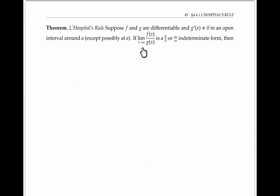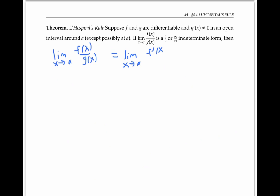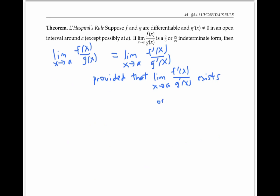L'Hopital's rule can be applied when f and g are differentiable functions, and the derivative of g is nonzero in some open interval around a, except possibly at a. Under these conditions, if the limit as x goes to a of f of x over g of x is a zero over zero or infinity over infinity indeterminate form, then the limit as x goes to a of f of x over g of x equals the limit as x goes to a of f prime of x over g prime of x, provided that the second limit exists or is plus or minus infinity.